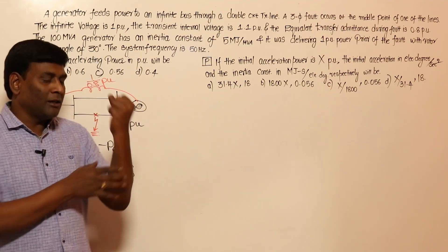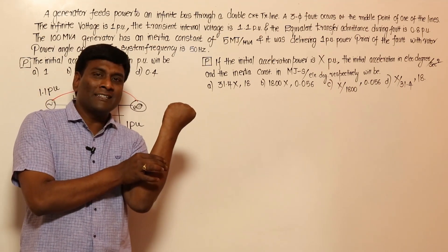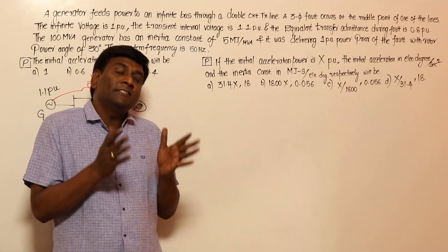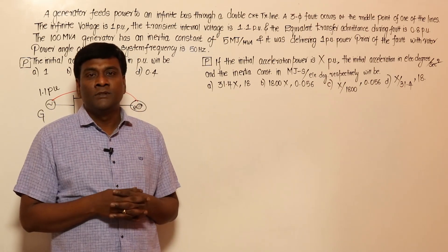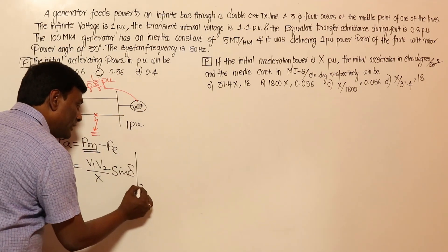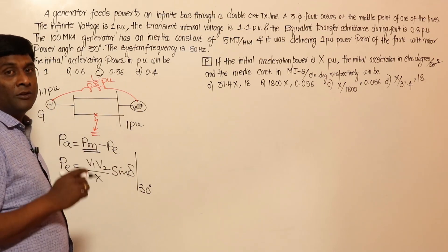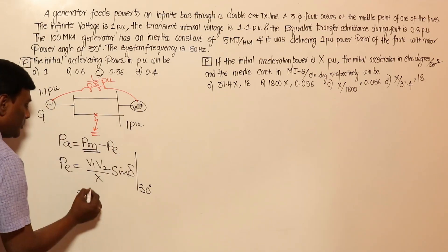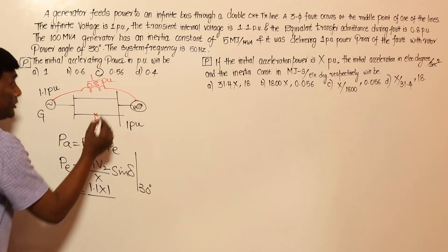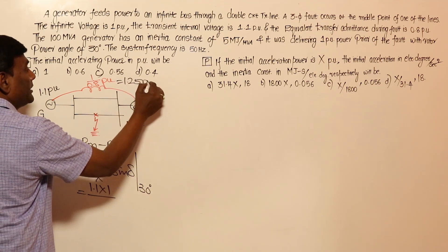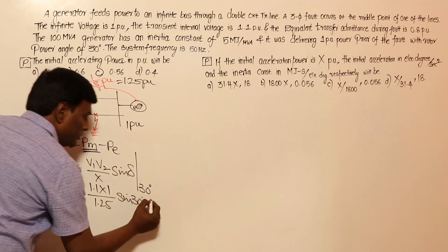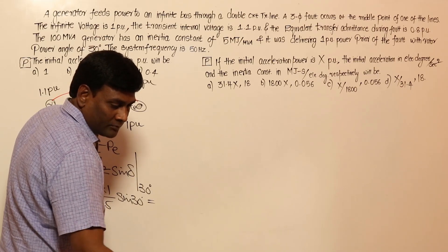Pe = V1 * V2 / X * sin(delta). Delta cannot change instantaneously either, because the rotor position is mechanical — it cannot shift instantly when the fault occurs. So delta remains 30 degrees immediately after the fault. V1 = 1.1, V2 = 1, X = 1/0.8 = 1.25 per unit. So Pe = 1.1 * 1 / 1.25 * sin(30°) = 1.1 * 0.8 * 0.5 = 0.44 per unit.